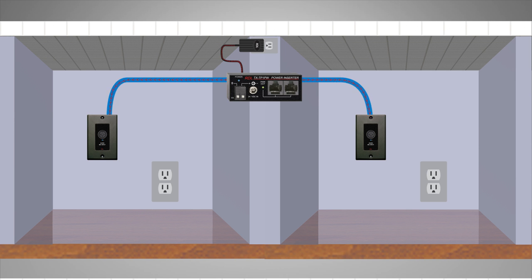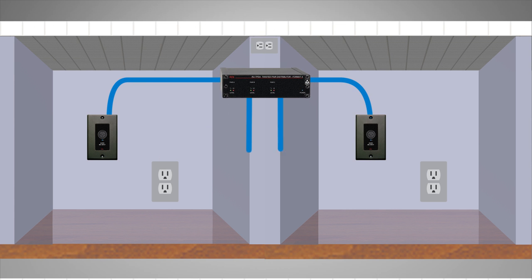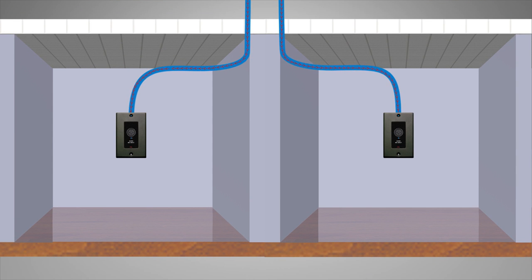If the audio sources need to be distributed through separate cable runs to different destinations, a Format-A distribution amplifier may be inserted. Local power connected to the distribution amplifier will power the connected sending and receiving modules.